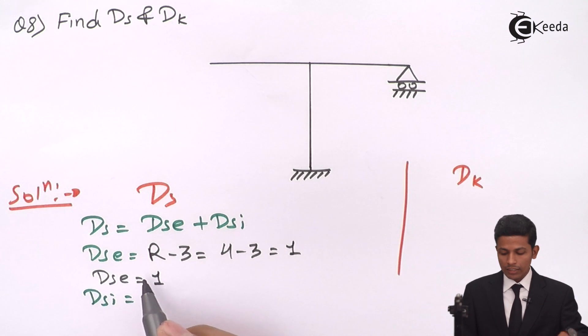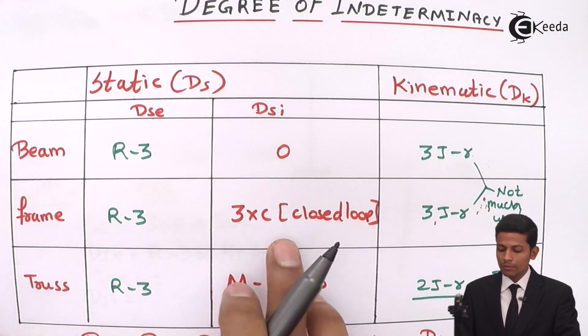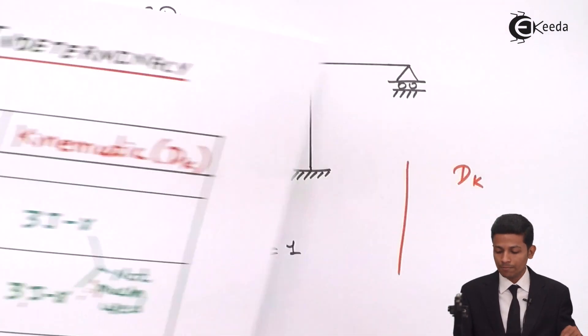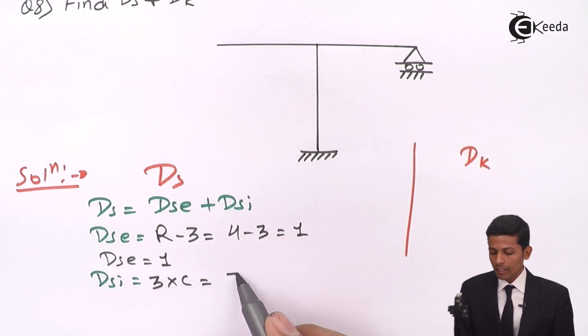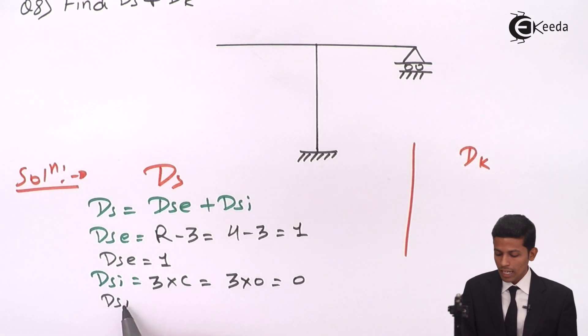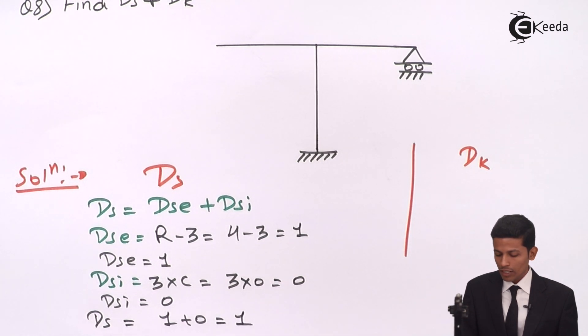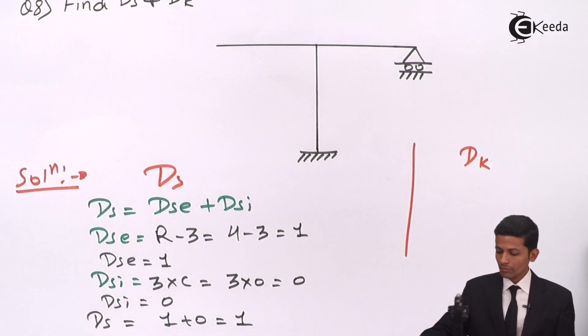Let's move on to Dsi. Dsi is nothing but, in frames, Dsi will be 3 into C. 3 into C - here also no closed loop. That's why 3 into 0 equal to 0, means your Dsi will be 0. So your total Ds will be 1 plus 0 equal to 1. Ds is equal to 1.